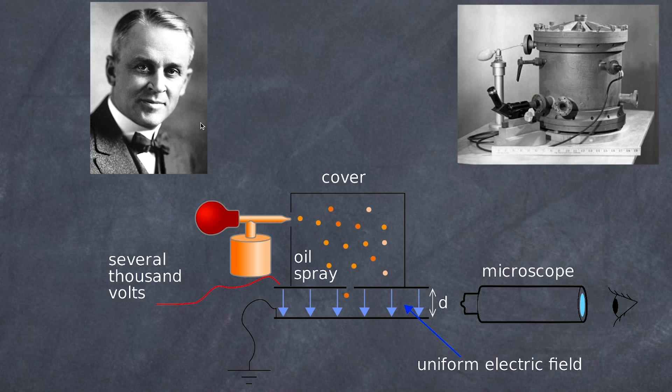So now let's have a look at the physics of balancing the force due to the electric charge and the force of the gravitational field. So here's a picture of Robert Millikan and the device that he used to determine the charge of the electron, and here is a simplistic diagram of what Tom has already explained to you.